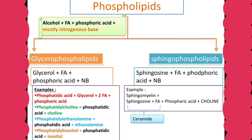Coming to the second class of phospholipids, sphingophospholipids — here sphingosine serves as the alcohol instead of glycerol. The basic composition is sphingosine plus fatty acid plus phosphoric acid plus nitrogenous base. The example is sphingomyelin, present in the membranes of the myelin sheath. Its composition is sphingosine plus fatty acid plus phosphoric acid plus choline. The combination of sphingosine with any fatty acid is known as ceramide — sphingosine is an amino alcohol.